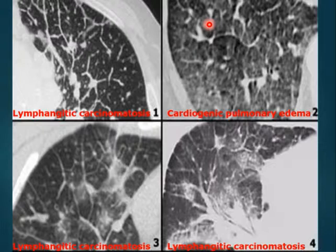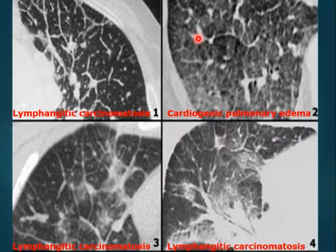Different features of lymphangitis carcinomatosa include interlobular septal thickening along the interlobular septa. Another kind shows centrilobular nodules due to malignant involvement. One example with interlobular septal thickening and ground glass pattern is very similar to cardiogenic pulmonary edema. However, the ground glass pattern here is more prominent and diffuse, and bilateral involvement would be seen. Lymphangitis can be bilateral and diffuse, but more commonly it is unilateral or focal.